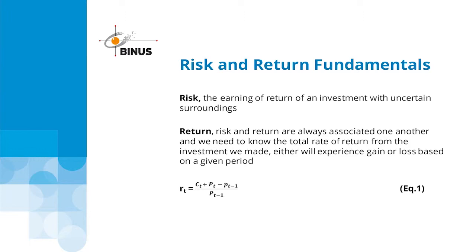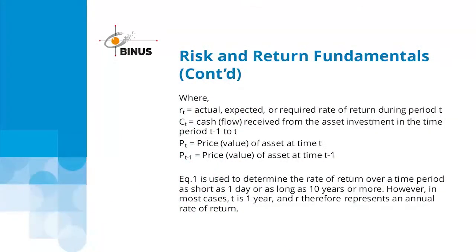We need to know the total rate of return from the investment we made — either a gain or loss based on a given period. The return equation is: R_T = (C_T + P_T − P_{T-1}) / P_{T-1}, where R_T is the actual, expected, or required rate of return during period T; C_T is the cash flow received from the asset investment; and P is the price value. This equation can cover periods as short as one day or as long as ten years. In most cases T is one year, so R represents an annual rate of return.